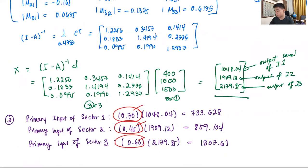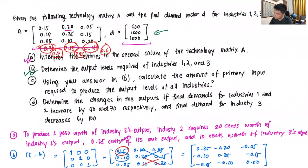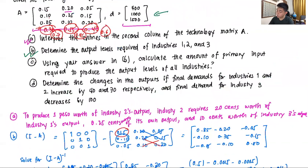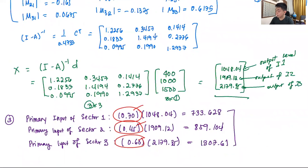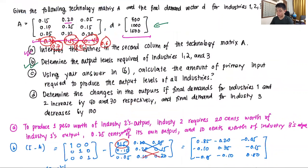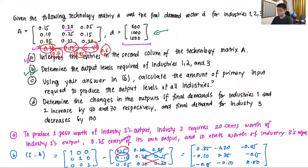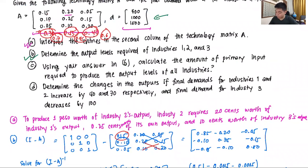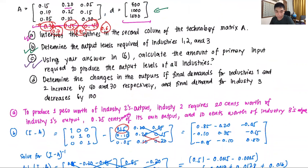To find the total primary input required to produce the output levels of all sectors, we add the three amounts: 733.628 + 859.104 + 1,307.61 = 2,900.342. So 2,900.342 is the total primary input required to produce the output levels across all industries. That completes part C.